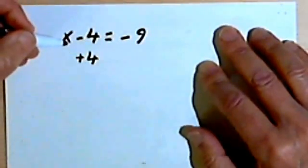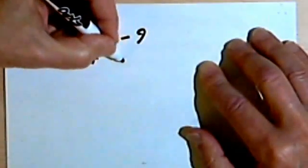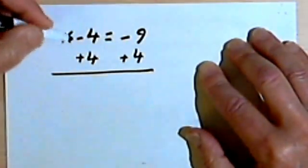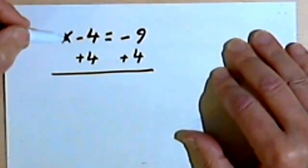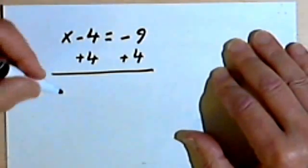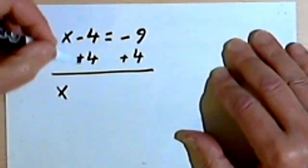If I add 4 to one side of the equation, I've got to add it to the other side of the equation. So seeing what this comes out to, I've got x over here, negative 4 and positive 4.